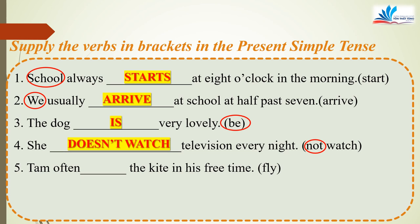Now the last one, number 5: Thumb often flies the kite in his free time. Chủ ngữ Thumb là danh từ số ít, câu trần thuật. Động từ fly tận cùng là Y đứng sau phụ âm, nên đổi Y thành I rồi thêm ES. So the correct answer for number 5 is flies.